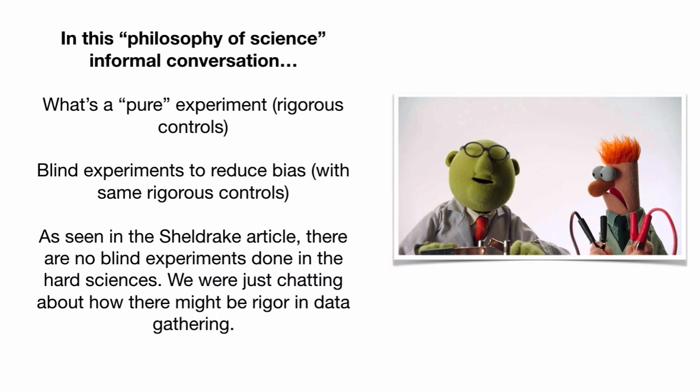That was just a quick slice out of our philosophy of science conversation. I really appreciate Slick James for the talk. We talked about what a pure experiment is — it's got rigorous controls, the experimenter is varying just the one independent variable, or can modify two or more. We also talked about blind experiments to reduce bias, done with rigorous controls. That's the important thing: rigorously gathering data. But as we saw in the Sheldrake article, there are no blind experiments done in the hard sciences. We were just talking about the philosophy of this and how we can get rigor in data gathering.